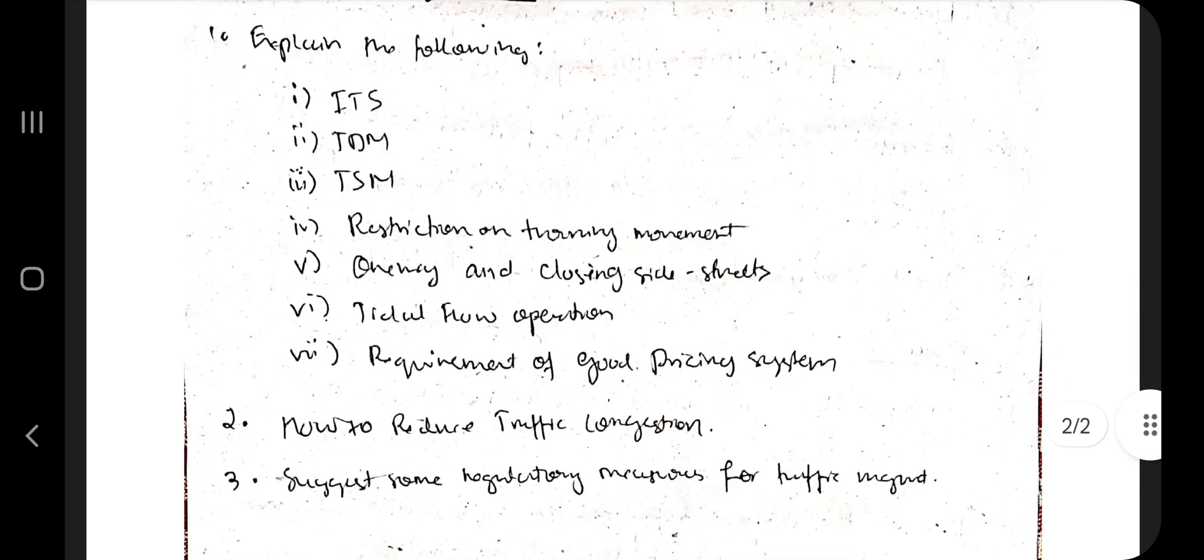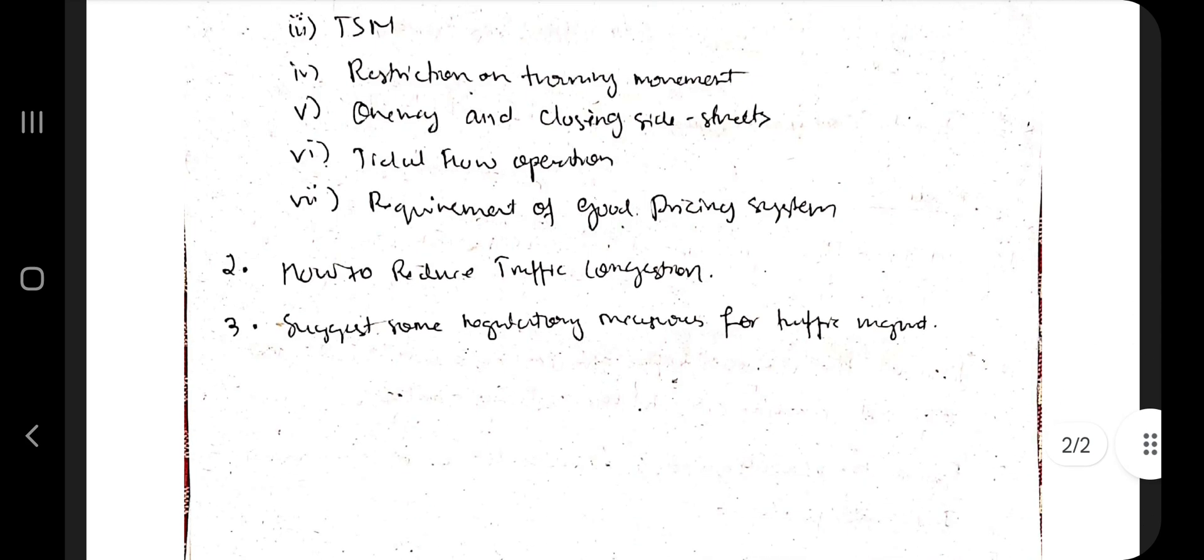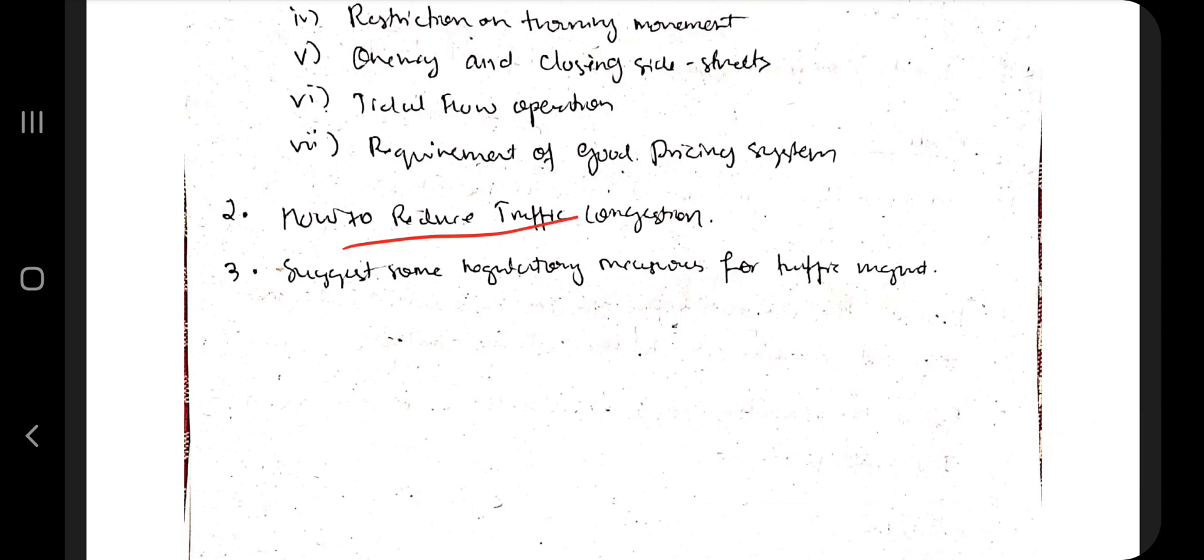Coming to Module 5, these are the important terms and concepts. Make sure you go through all of them. And the next one is reduced traffic congestion, how do you reduce traffic congestion, suggest some regulatory measures for traffic management. These are the most important ones and the other ones you can find in the previous papers.